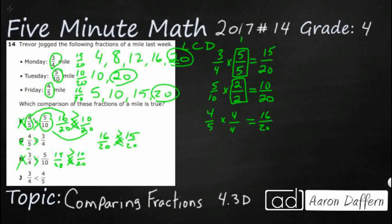I really hope J is my answer, because that is the last one left. Let's take a look. J has 3 fourths — that is my 15 twentieths — and 4 fifths is 16 twentieths. They have the correct sign: a less than sign. Because 15 twentieths is less than 16 twentieths, we can say that 3 fourths is less than 4 fifths. So our answer here is going to be J.